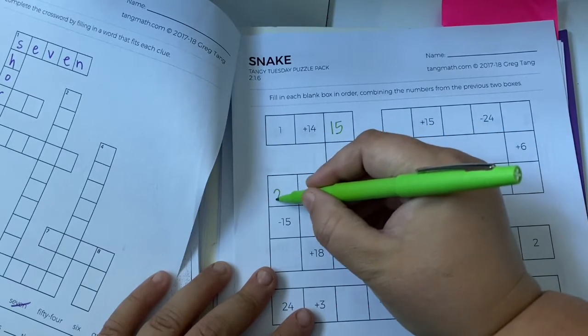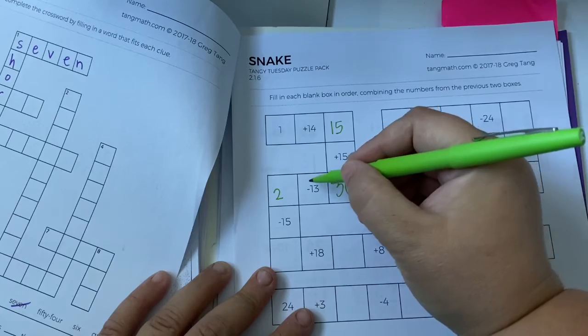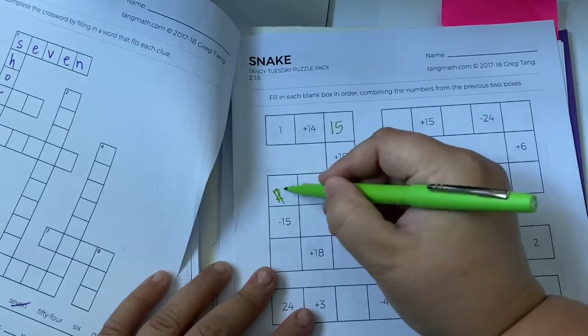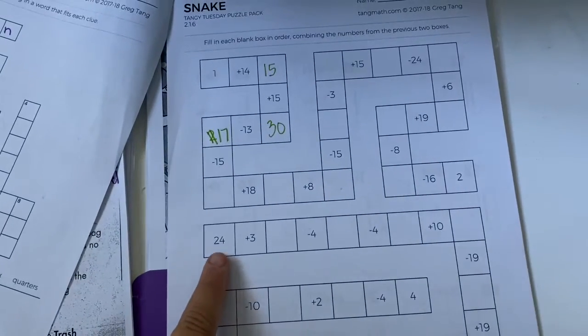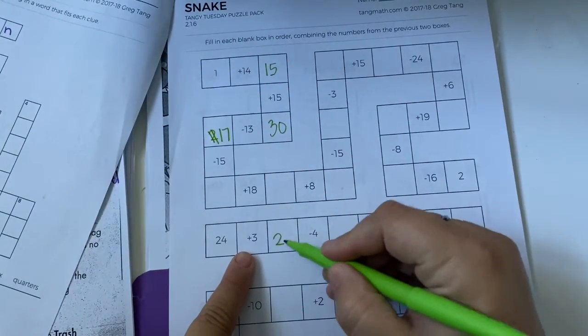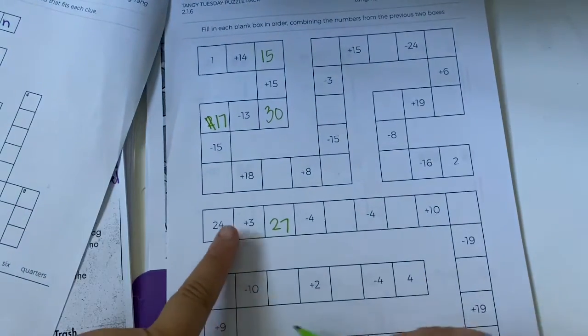30 minus 13 is, oops, I messed up, 17. Then you're going to start again down here. 24 plus 3, 27. On and on until the end of the snake.